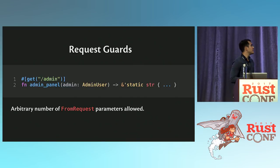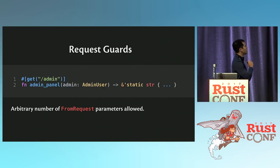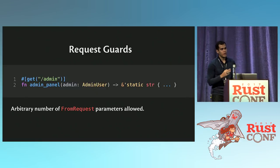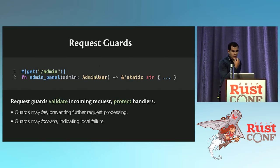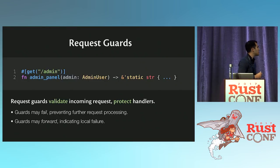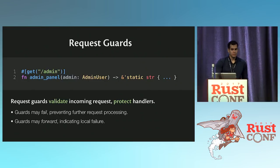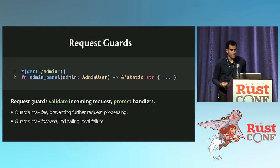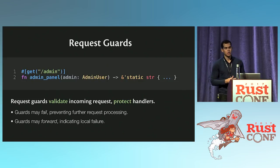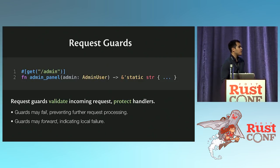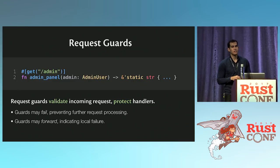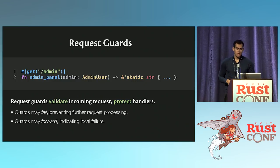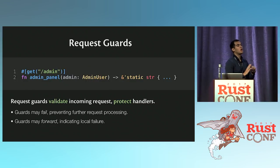Rocket's mechanism to describe these kinds of validations are request guards. For any route, you can list any number of parameters in the handler that implement the trait `FromRequest`. Here we have one — `AdminUser`. What the `AdminUser` type does is it implements this `FromRequest` trait, and the trait will verify that the request actually contains an admin user. If it can't do that, it has one of two options: it can fail, which says do not call any handler that needs an admin user, or it can forward, which says this route — don't call it, but maybe try a different route.